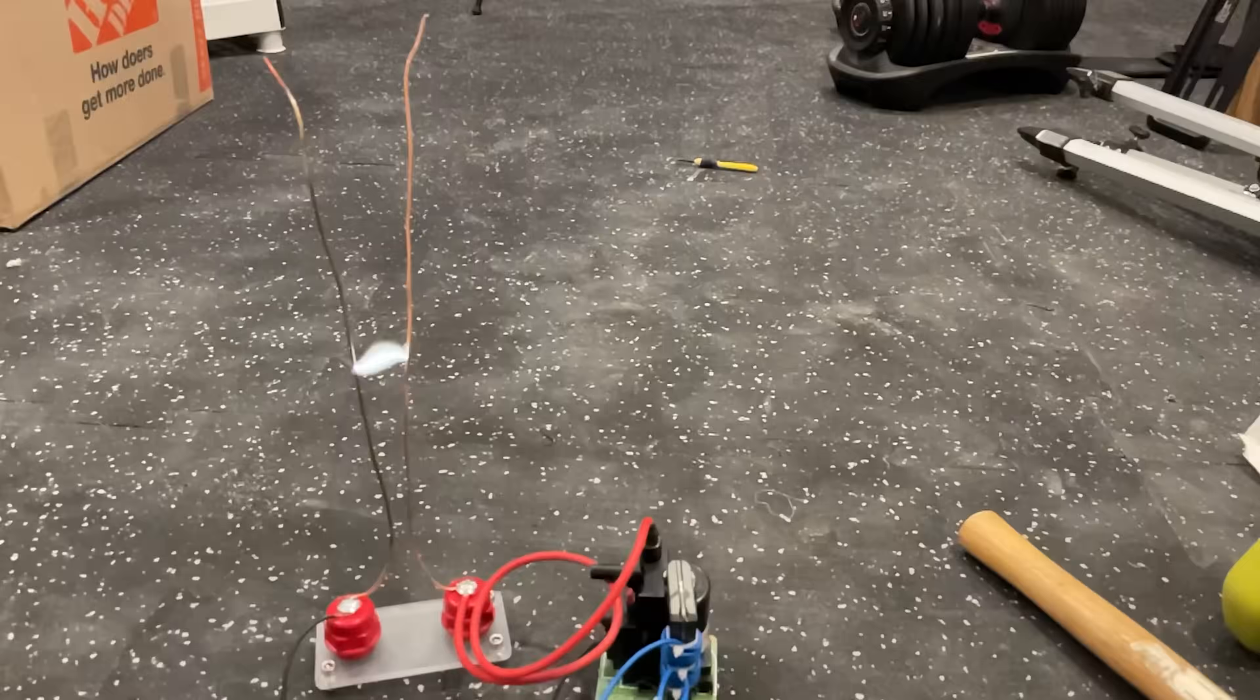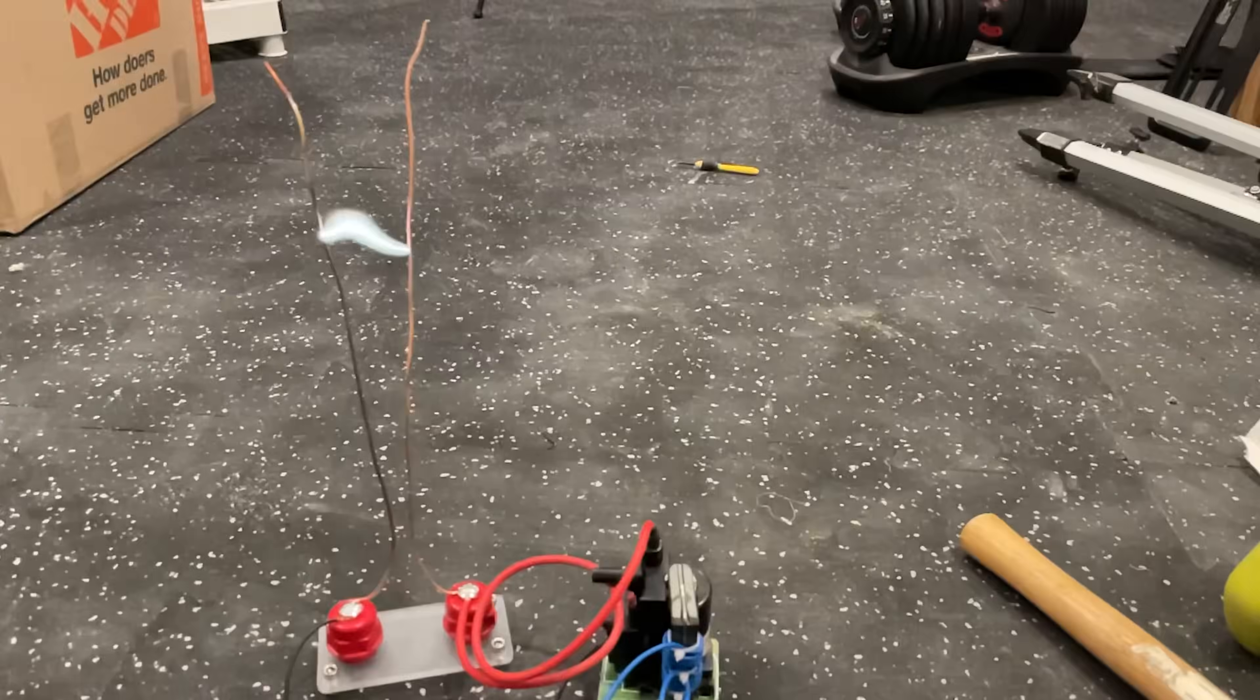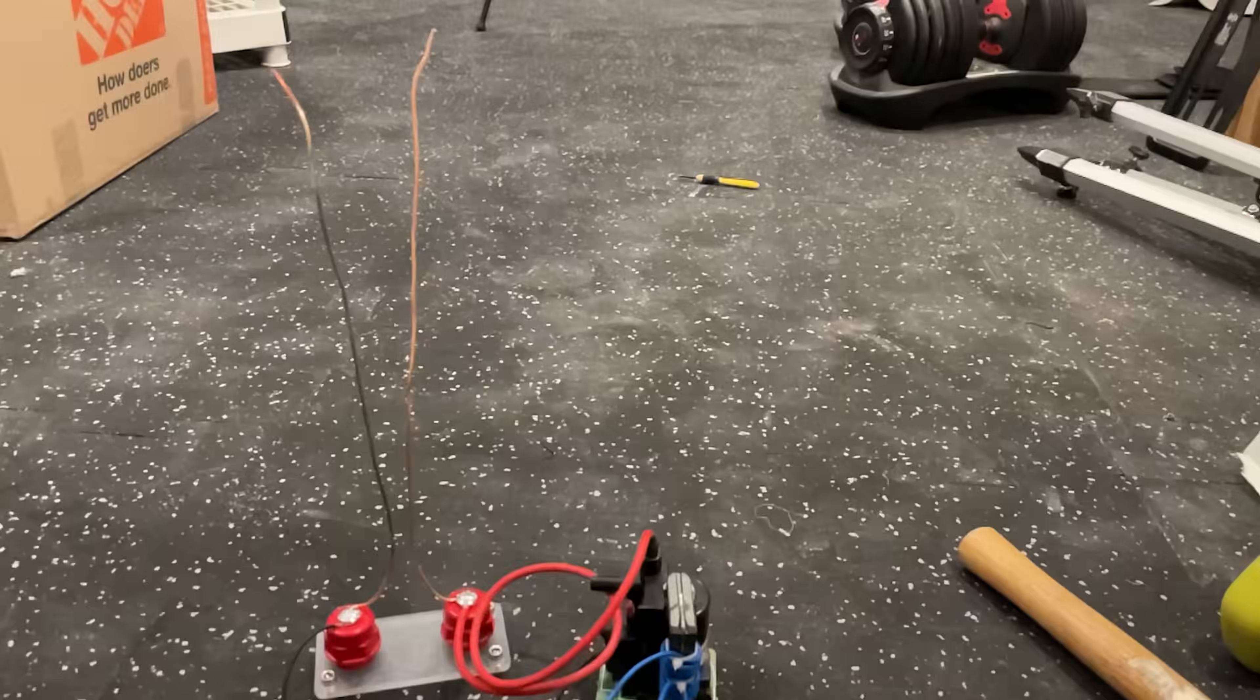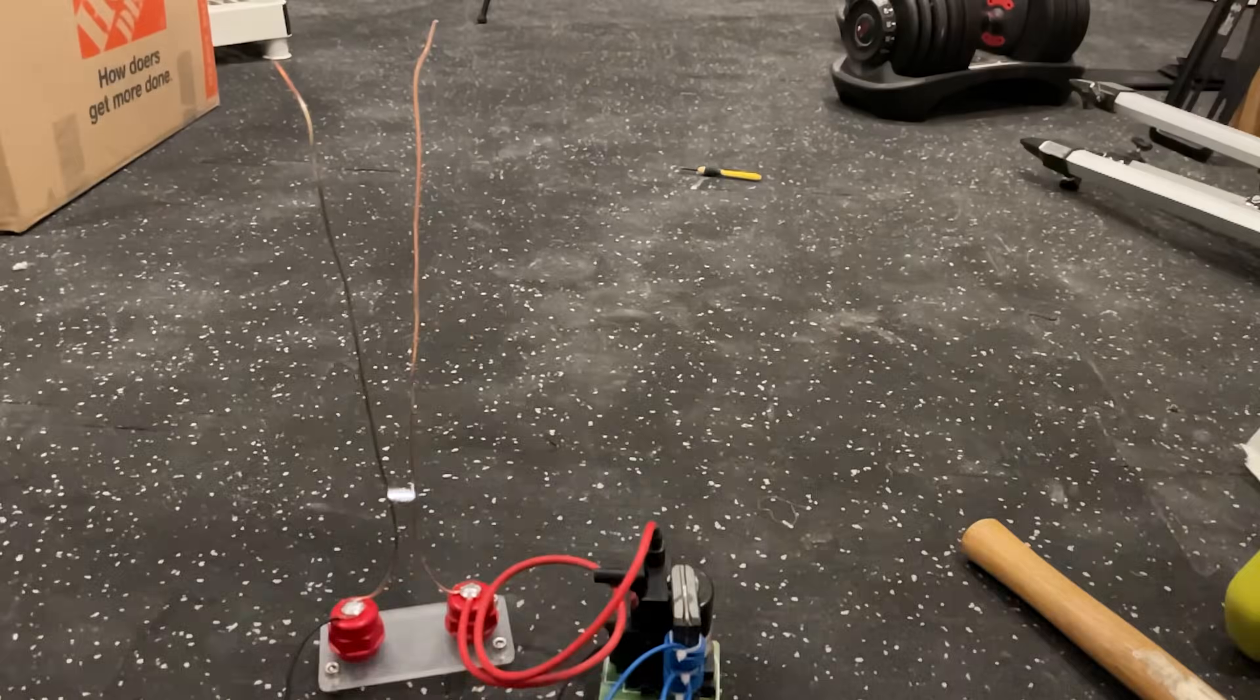But why does the arc rise? Well, it's because the plasma is so hot. It heats the air around it almost instantly. And since warm air rises, the air and the plasma rise up the electrodes.